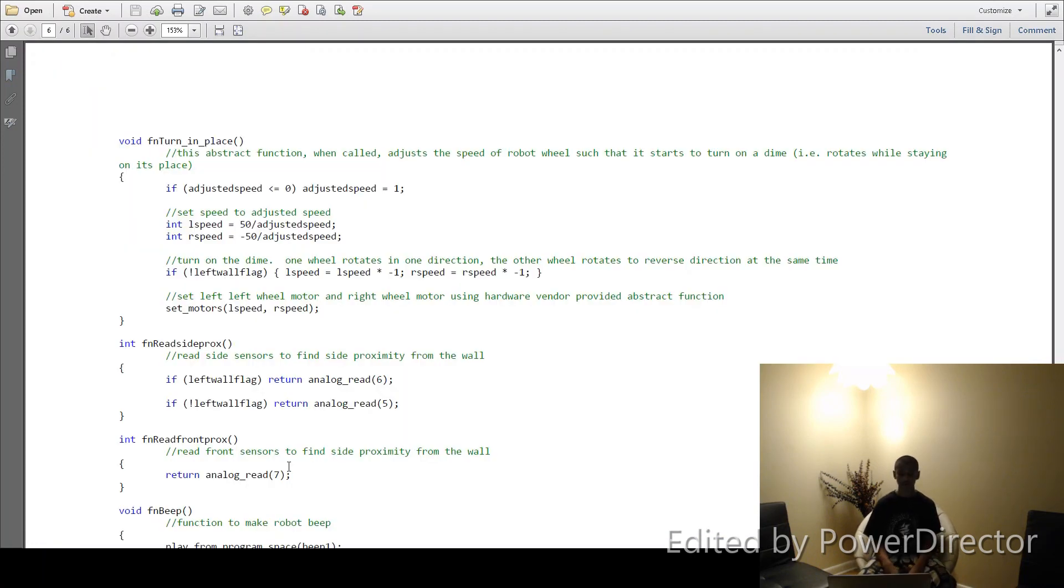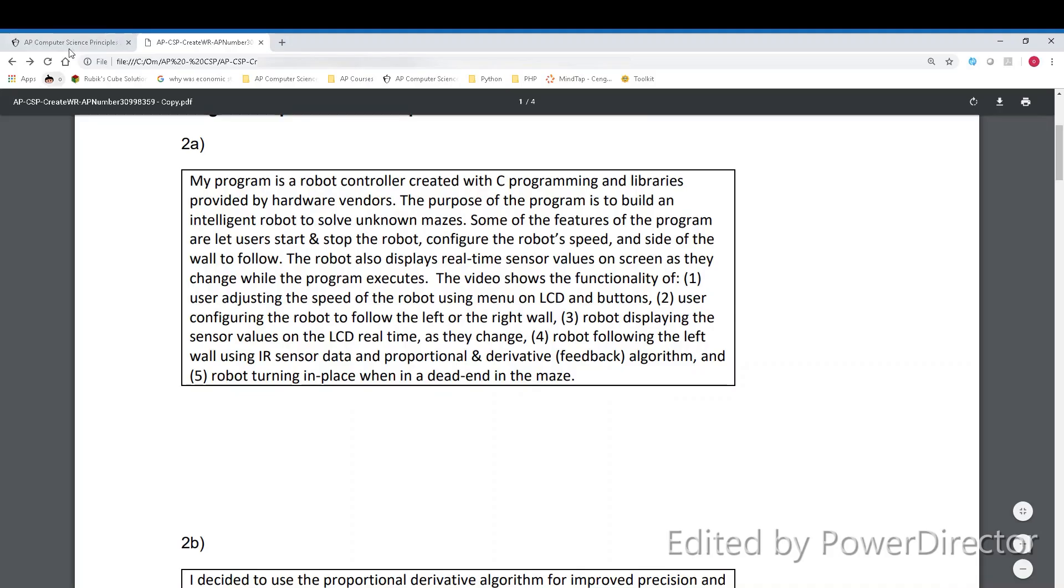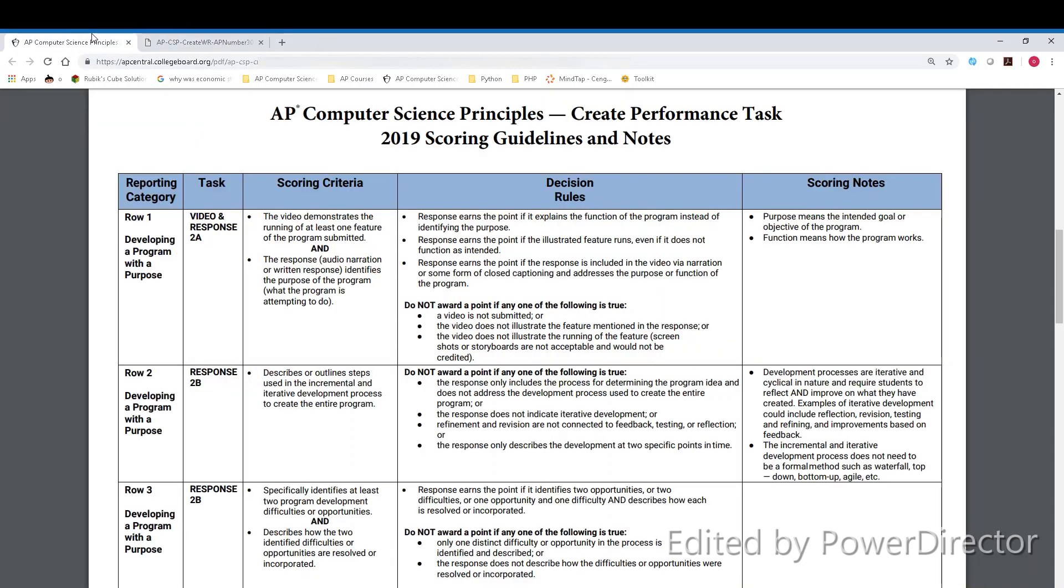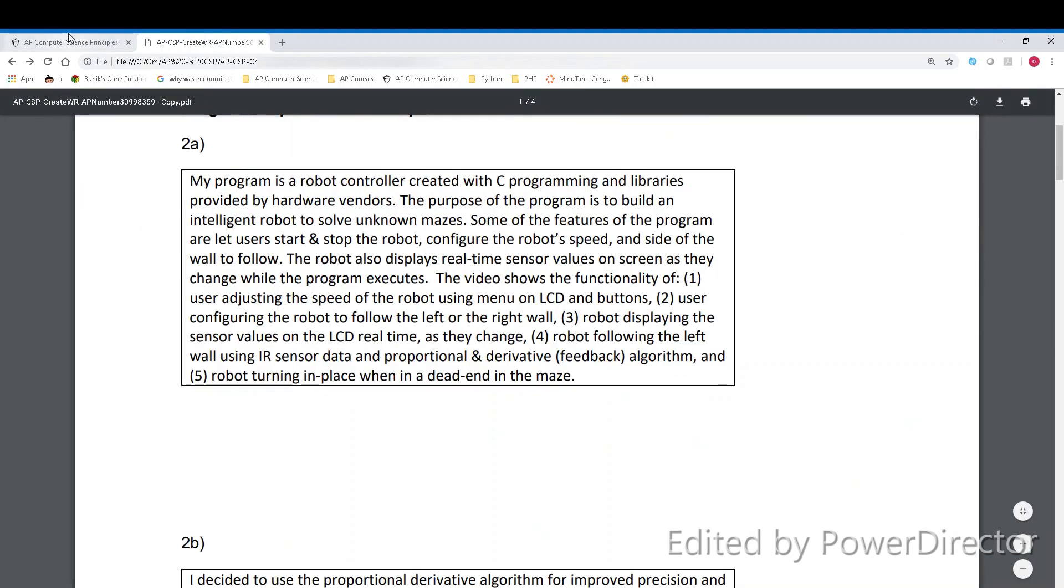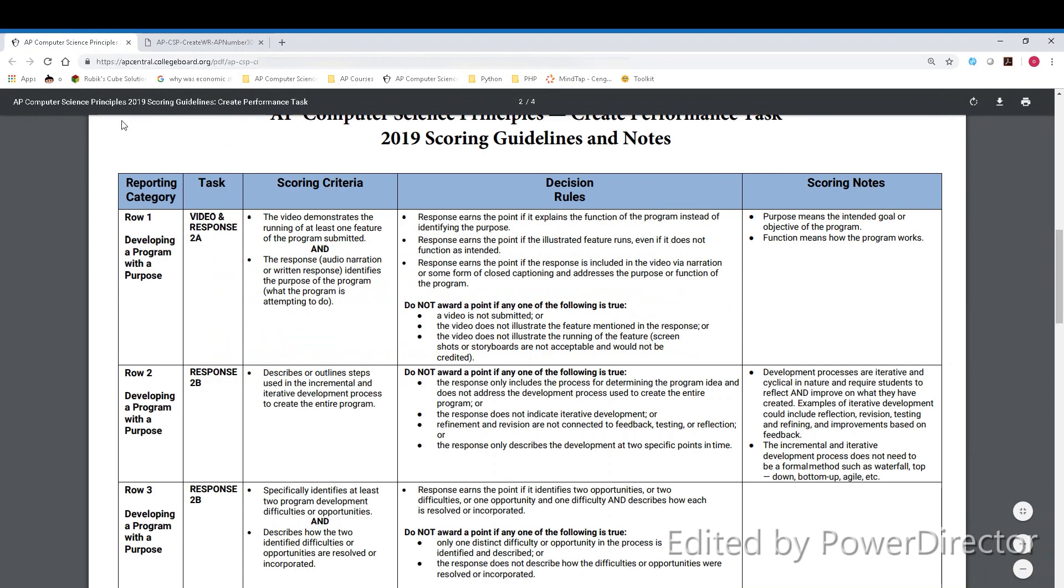Now let's move on to the written response. Let's start running through the written responses, and matching them to the rubric. The rubric has the same basic format as the explore task rubric. We have the scoring criteria, the decision rules, and the scoring notes, and all of them have the same things as the explore task rubric. So let's get started going through each part of the written task and matching that to the scoring criteria.